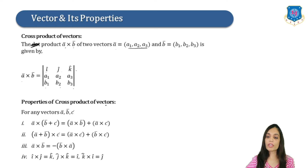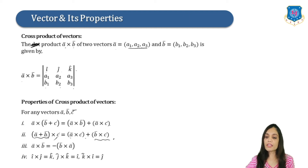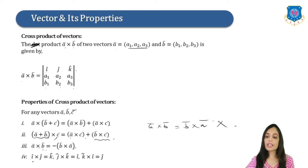Properties of cross product: A bar × (B bar + C bar) = A bar × B bar + A bar × C bar. Also, (A bar + B bar) × C bar = A bar × C bar + B bar × C bar. Unlike dot product, A bar × B bar ≠ B bar × A bar; instead, A bar × B bar = −(B bar × A bar). Finally, î × ĵ = k̂, ĵ × k̂ = î, and k̂ × î = ĵ.